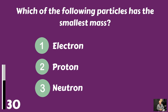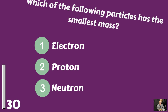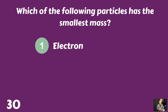Which of the following particles has the smallest mass? Is it the electron, the proton, or the neutron? The particle with the smallest mass would be the electron.